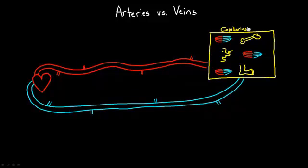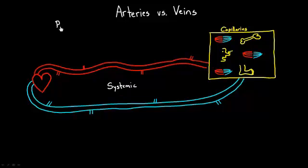The blood starts at the heart, goes to the capillaries through the arteries, and then returns through all of the veins. Very simply, this is the systemic circulation. Of course, you know there's also the pulmonary circulation, so let me draw that out.